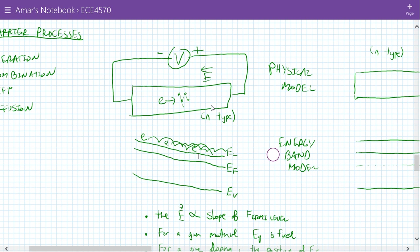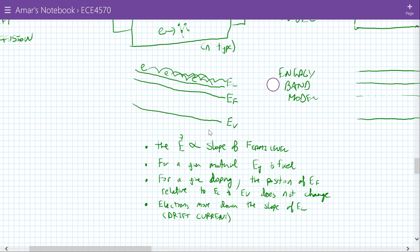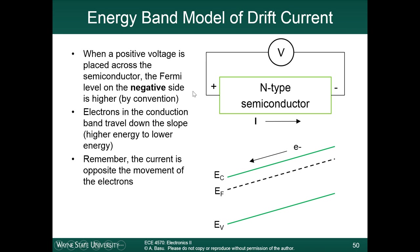So this concept of drift current — electrons move down the slope of E_C — this is drift current. Next module we will talk about what diffusion current is. Going back to the slide, when a positive voltage is placed across the semiconductor, the Fermi level on the negative side is higher by convention — that is how you get this bending in the band diagram. The positive side has the lower Fermi level. Electrons move from high to low Fermi level, and the current is going in the opposite direction. As a homework problem, draw the energy band diagram for drift in a P-type semiconductor using the principles I just showed you — I have had problems like this on past quizzes and exams.